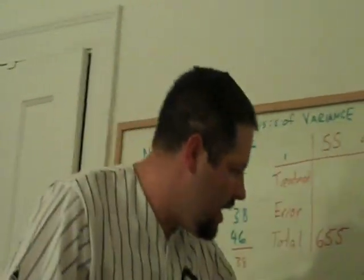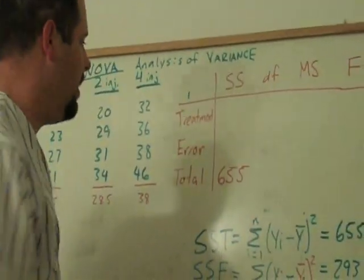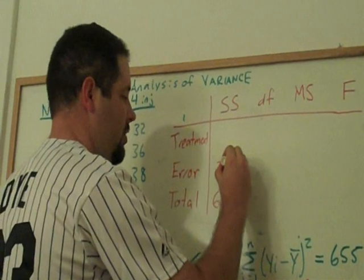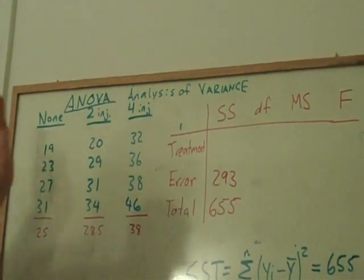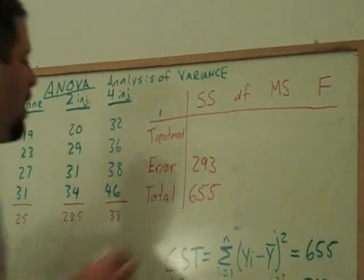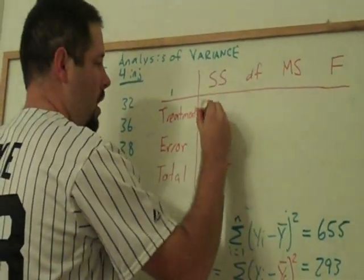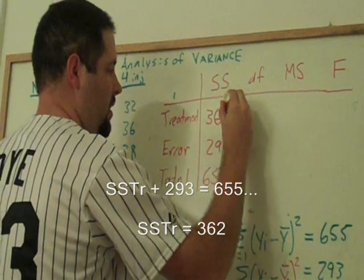We've had 293 left over in our computation. And that means that our treatment, by just guessing the mean of each of these groups, we were able to explain 362.